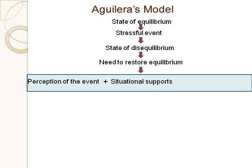Situational supports are another balancing factor — whether they're adequate or inadequate. This can be many things: other people in the person's life such as family and friends, and broader factors like economic resources. When something bad happens, does this person have a job where they can take time off without getting fired? Or if they take off to deal with one crisis, will that lead to another crisis?